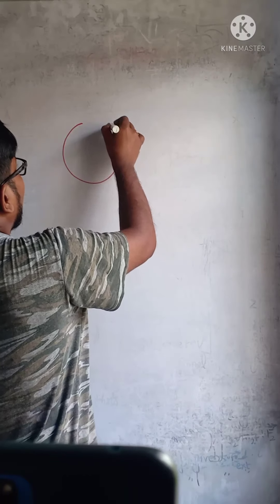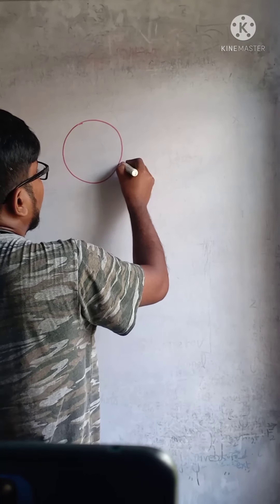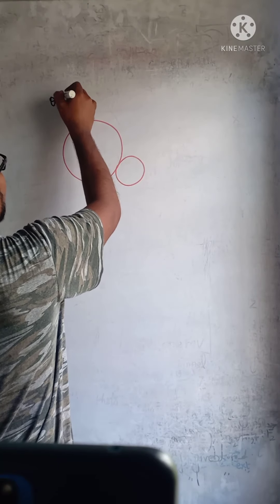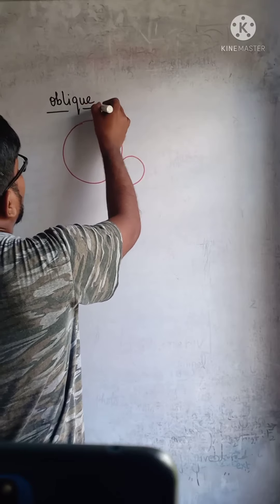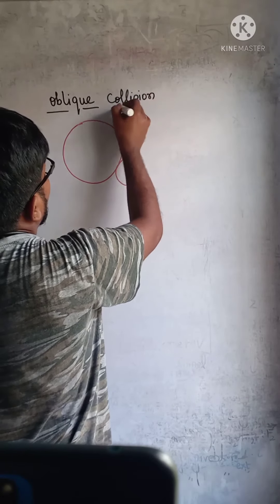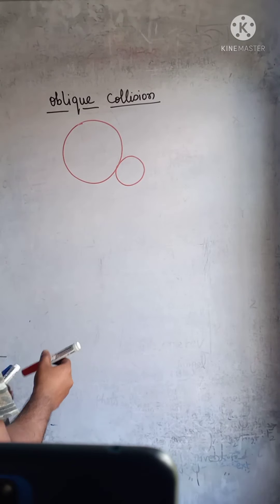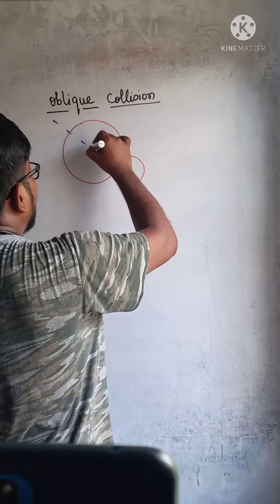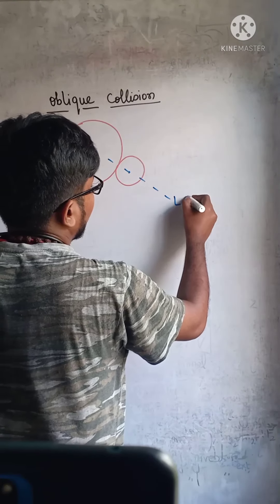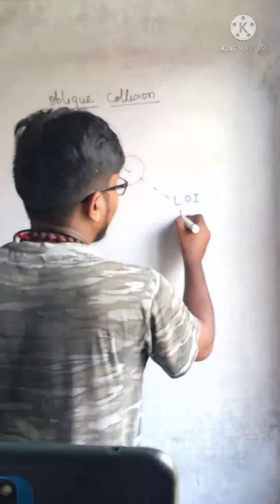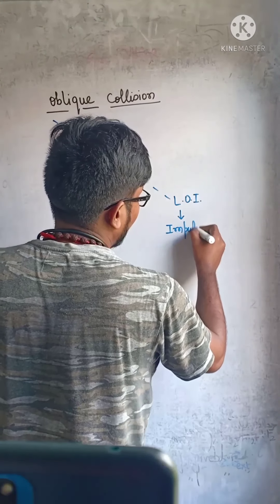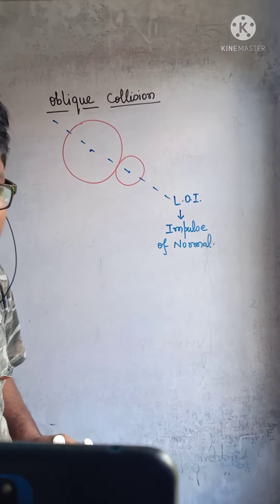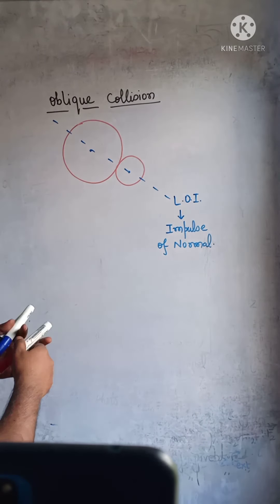Suppose we talk about the oblique collision. Just for example, let us say there are two balls — they are colliding and this collision is oblique. So if we talk about oblique collision, there are some steps you can understand. First, the center line — we call it the line of impact. Along the line of impact, the impulse works. The impulse of the normal during collision acts along this line of impact.